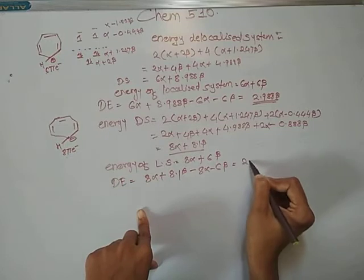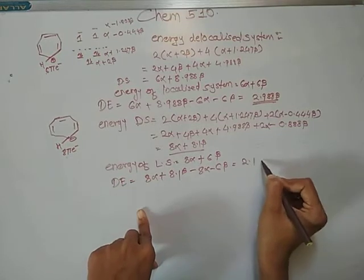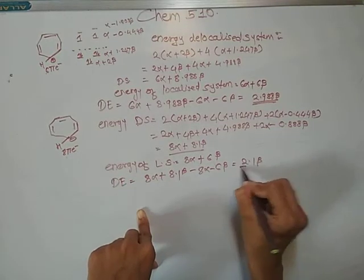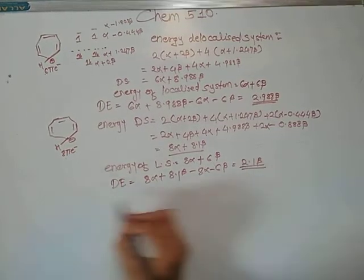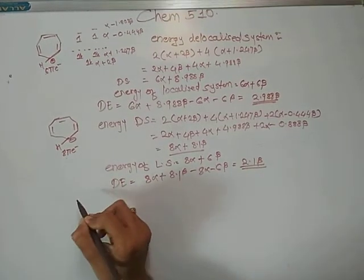The energy of the localized system for 8 pi electrons is 8 alpha + 3 double bonds = 6 beta. So the delocalization energy DE = (8 alpha + 8.1 beta) minus (8 alpha + 6 beta) = 2.1 beta.